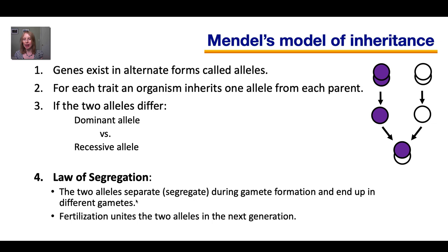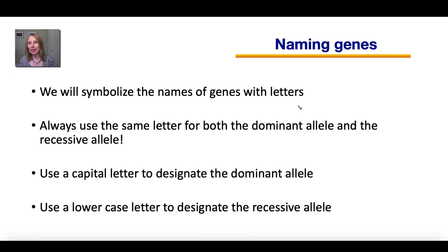And now we get to Mendel's law of segregation. In the law of segregation, Mendel stated that the two alleles separate — or segregate — during gamete formation and end up in different gametes. The two alleles in the parents separate into different gametes, and then fertilization unites the two alleles in the next generation.